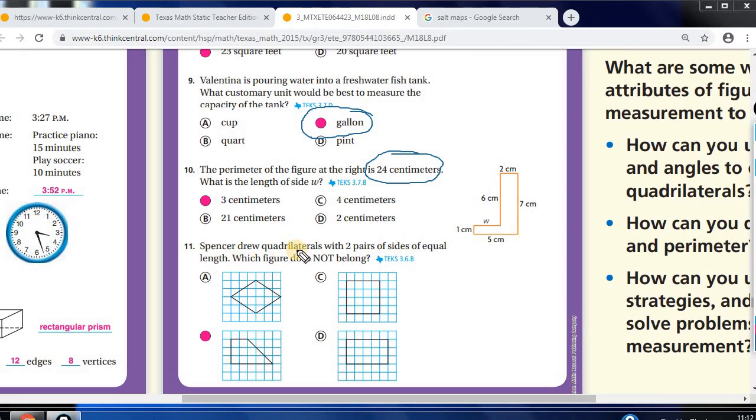The next one, Spencer drew quadrilaterals with two pairs of sides of equal length. Which figure does not? Two pairs of equal sides with equal length. This one, this one, this one, two pairs of sides of equal length. Two pairs. Which one does not have two pairs? It's our good old friend, the trapezoid right here.